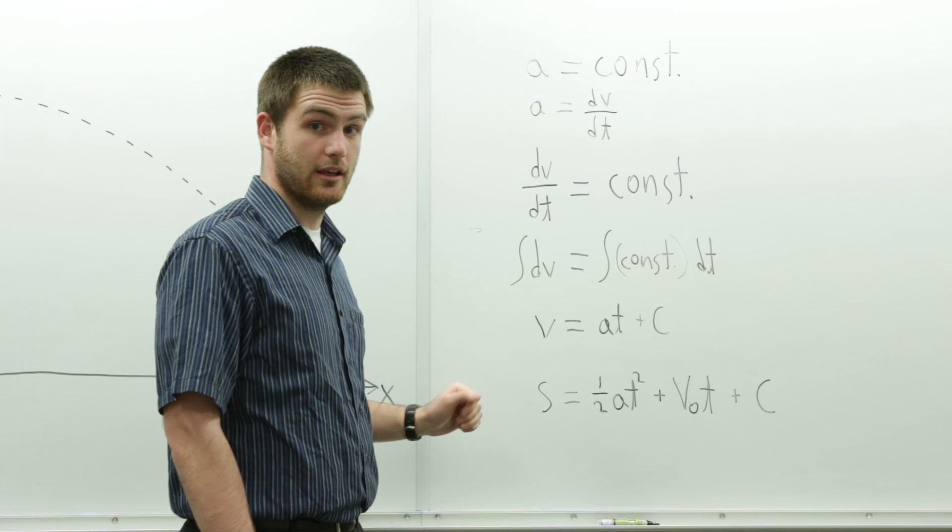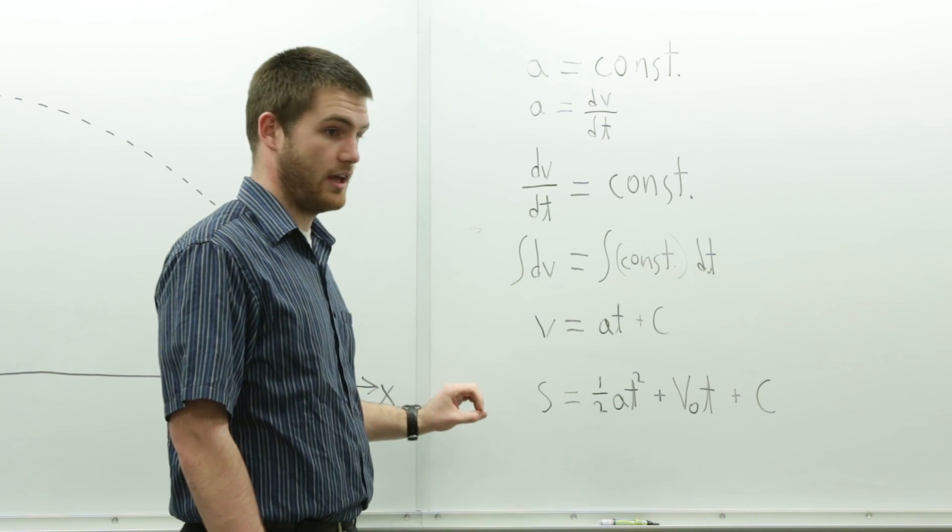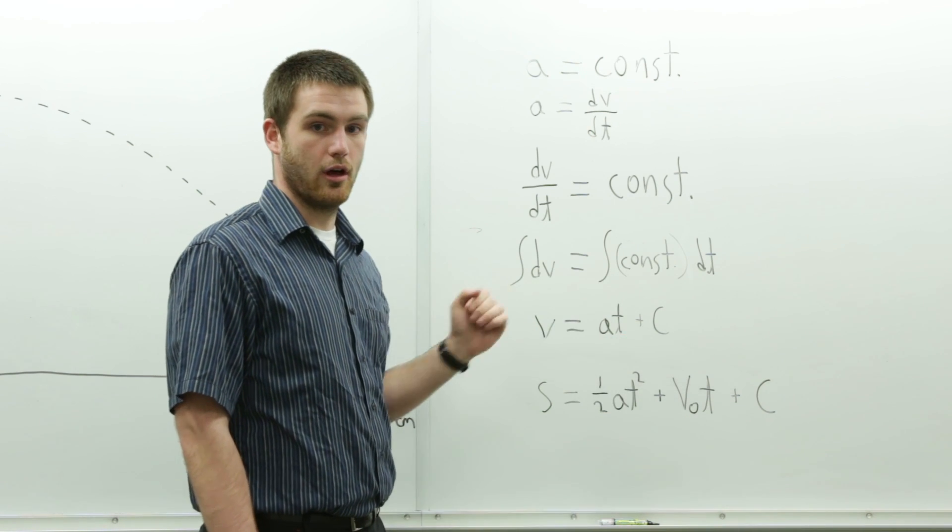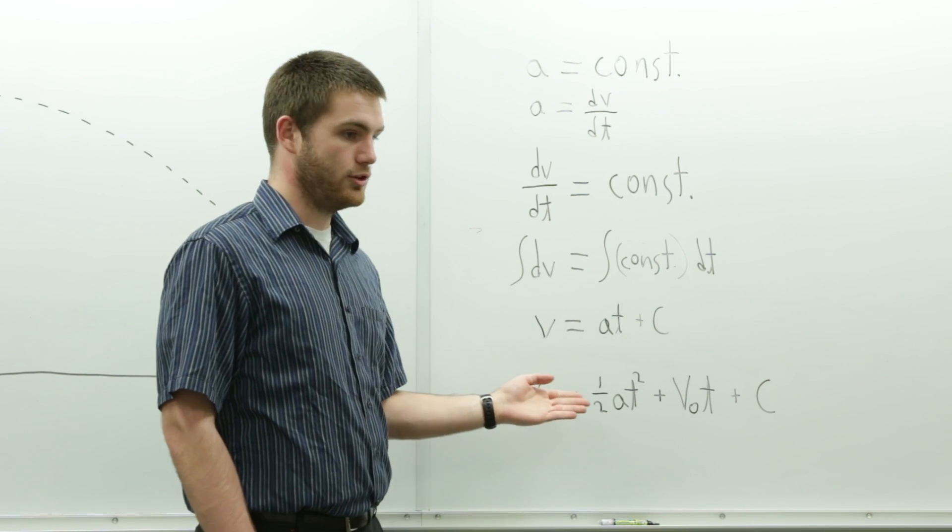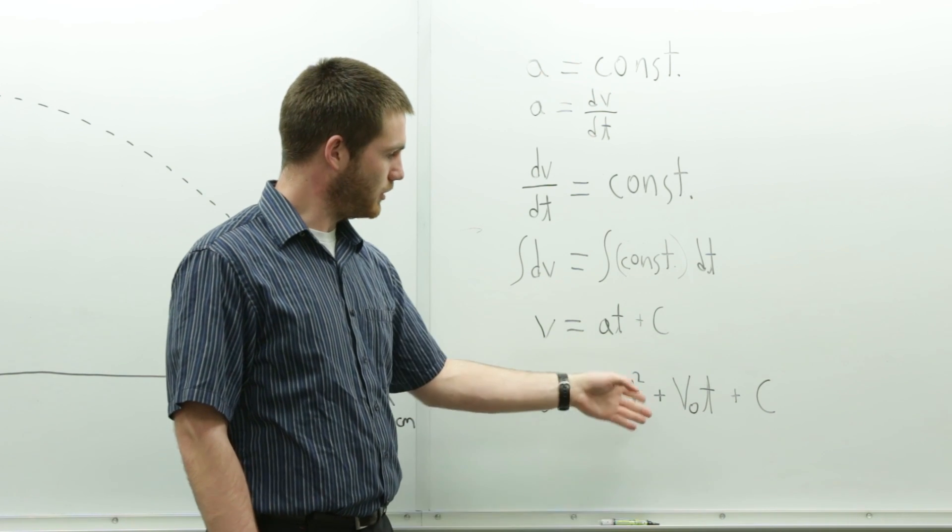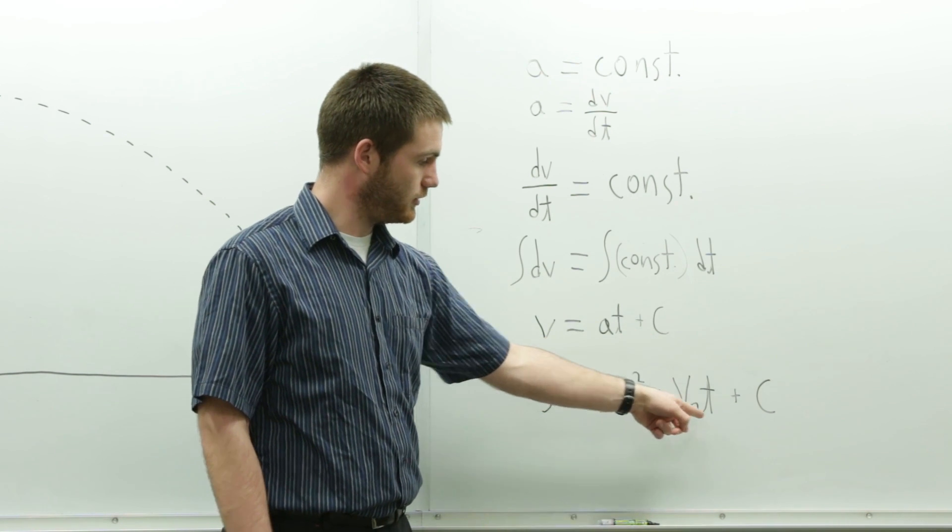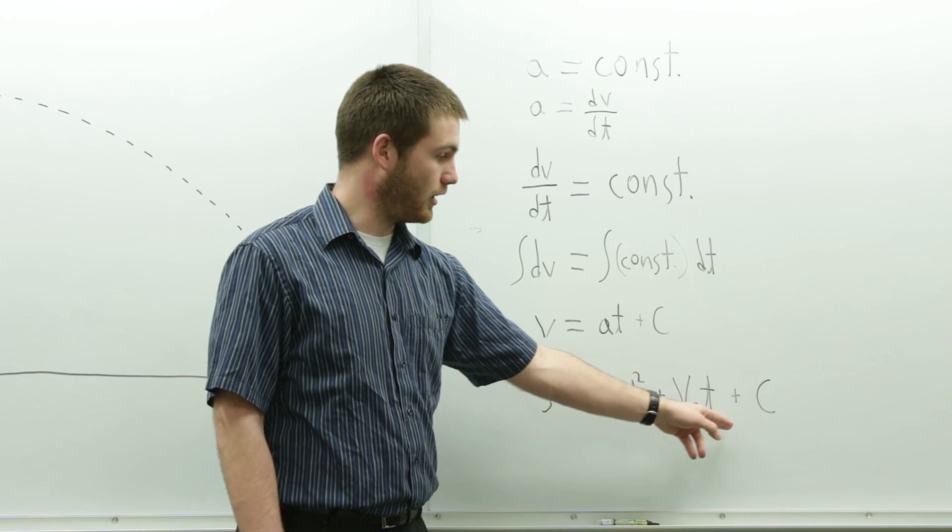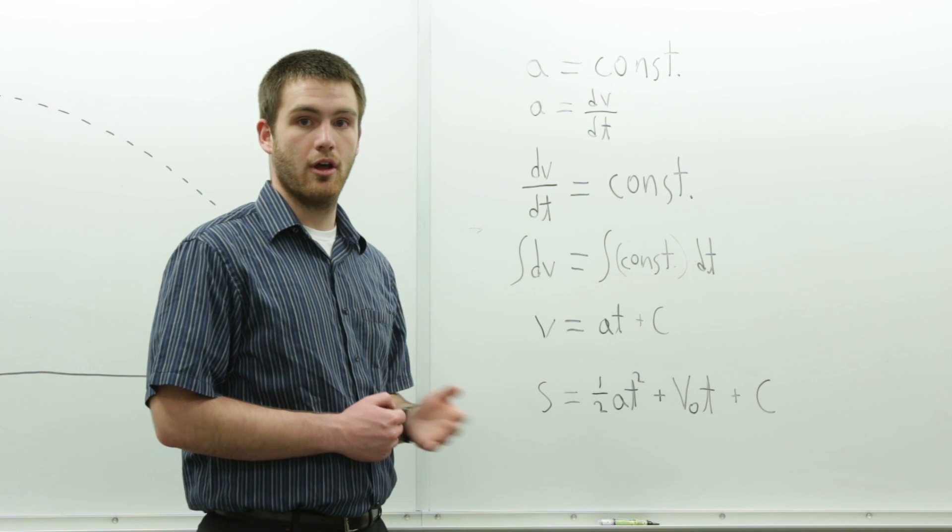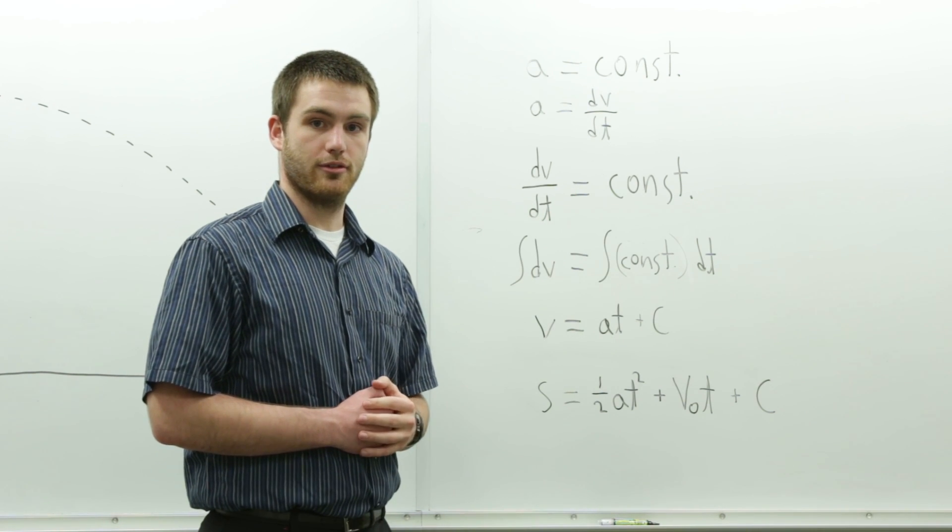From there, you can take the integral again to get position, which is S. Your position is going to be the integral of your velocity equation. So you would have one-half acceleration times time squared, plus whatever your initial velocity was times time, plus an initial position. And that's where we got our equations that we used throughout this particle motion system.